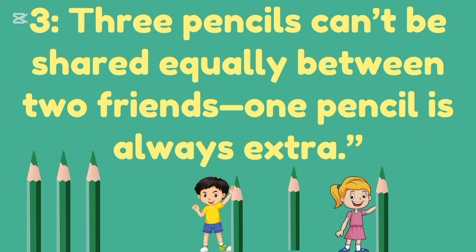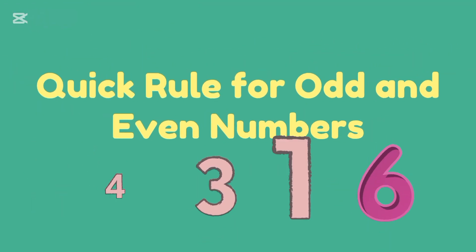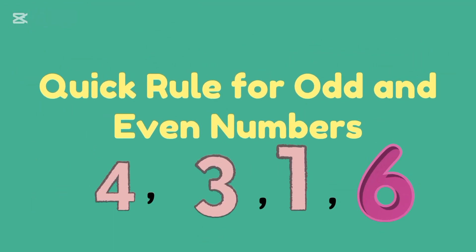Three pencils can't be shared equally between two friends. One pencil is always extra. One is for one friend, one is for the other, and one is left. Quick rule for odd and even numbers.